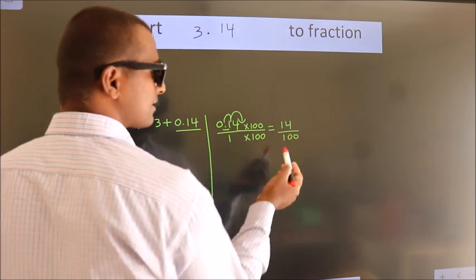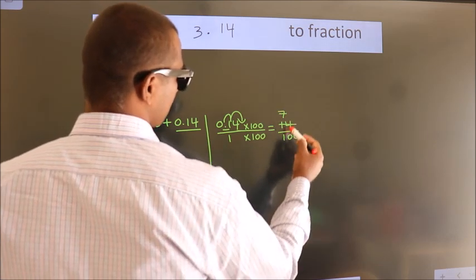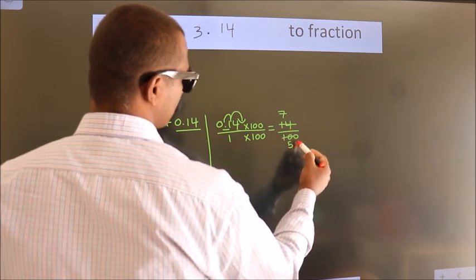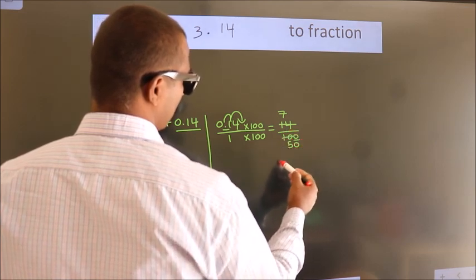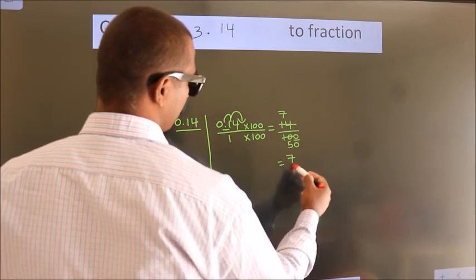Now I cancel with 2. 2 7s, 2 5s. This 0 as it is down. So the fraction we got is 7 by 50.